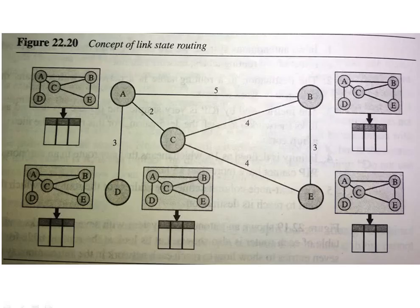The concept of link state is shown with a topology containing nodes A, B, C, D, and E. This topology gets copied to A, the same topology gets copied to D, and the same topology copies to E, C, and B nodes. The respective routing tables are then maintained accordingly depending on what kind of link states each node has.